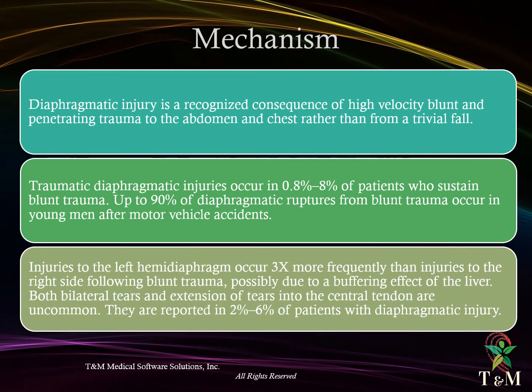Mechanism: diaphragmatic injury is a recognized consequence of high-velocity blunt and penetrating trauma to the abdomen and chest, rather than from a trivial fall. It occurs in 0.8–8% of patients who sustain blunt trauma. Up to 90% of diaphragmatic rupture from blunt trauma occurs in young men after motor vehicle accidents. Injury to the left hemidiaphragm occurs three times more frequently than injuries to the right side following blunt trauma, possibly due to a buffering effect of the liver. Both bilateral tears and extension of tears into the central tendon are uncommon, reported in 2–6% of patients with diaphragmatic injury.